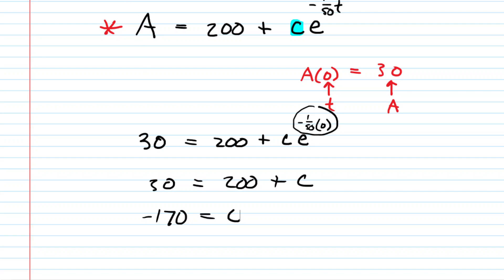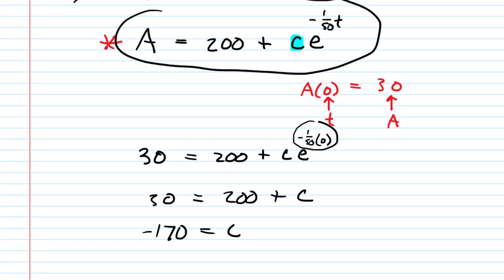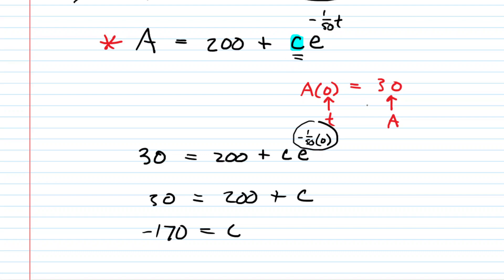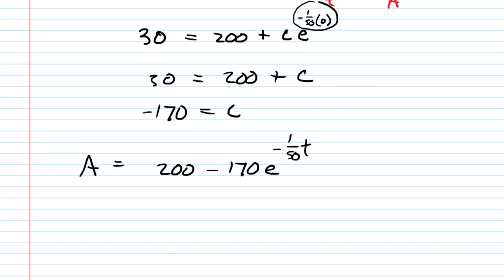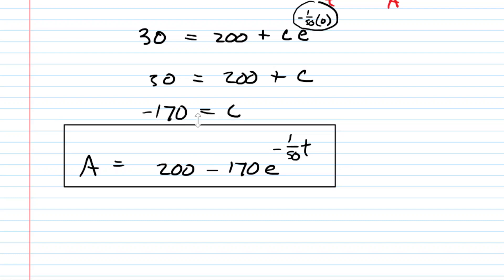Plugging C equals negative 170 into our equation, we arrive at the solution to the original differential equation with the given initial condition. Now you could plug in any value of time and determine how many grams of salt are in the tank at that particular moment.